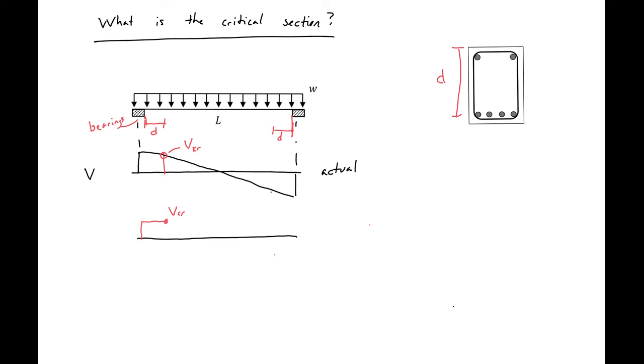And the same thing on the other side. So we'll come down and it'll be equal because we're symmetrical. So V critical on both sides. We'll come over and down. Then we'll be just the same as our normal diagram in between those values.